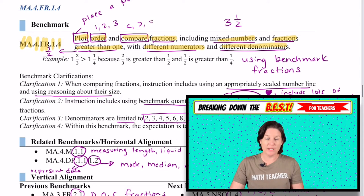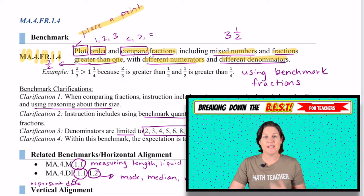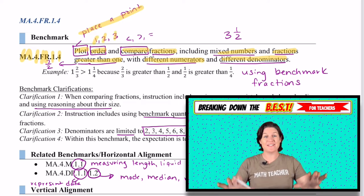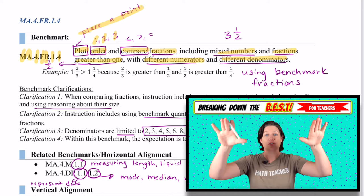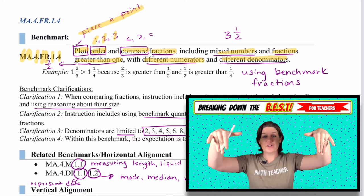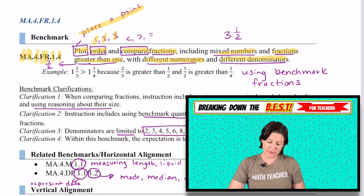So let's go through that again. Plotting, that means to place a point on a number line. Ordering means to put them in first, second, and third. It might go from ascending order from least to greatest or descending order, greatest to least. We'll also have to compare using our symbols right there.